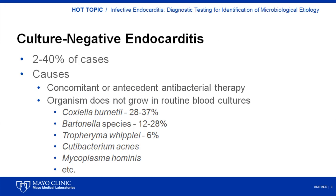Blood cultures are negative in 2-40% of cases. The causes of so-called culture-negative endocarditis fall into two categories: negative blood cultures due to concomitant or antecedent antibacterial therapy, or the presence of an organism that does not grow in routine blood cultures, with the former being more common. In patients who have not received antibiotics, the most common etiologies of culture-negative endocarditis are Coxiella burnetii and Bartonella species, accounting for 28-37% and 12-28% of cases respectively. Tropheryma whipplei causes up to 6% of culture-negative endocarditis cases. Cutibacterium acnes may cause culture-negative endocarditis due to the requirement for prolonged blood culture incubation, and some strains may not grow in blood cultures. Mycoplasmal endocarditis, while rare, is primarily caused by Mycoplasma hominis and is usually diagnosed using a nucleic acid amplification test.